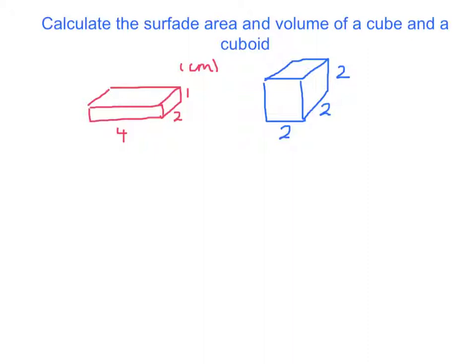Now let's look at the blue cuboid. We've got exactly the same formula: volume equals length times breadth times height. In this case, the length is 2, the breadth is 2, and the height is 2. 2 times 2 is 4, and 4 multiplied by 2 is 8. So the volume of this cuboid is also 8 centimetres cubed. The volumes of these two cuboids are identical.